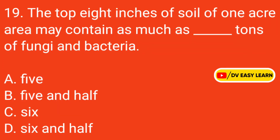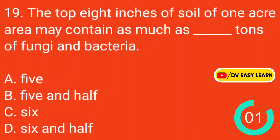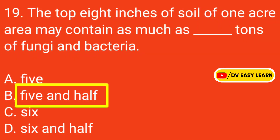Question 19: The top 8 inches of soil of 1 acre area may contain as much as dash tons of fungi and bacteria. Correct answer: 5 and a half.